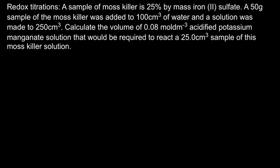So to begin with, I've got a moss killer, which is iron(II) sulfate, and I've been told it's 25% by mass of the actual iron(II) sulfate. So if I had 100 grams of it, then 25 grams of that 100 grams would be iron(II) sulfate. So what I need to do now is if I've got 50 grams, I need to figure out what mass that actually is of iron(II) sulfate that's in there.